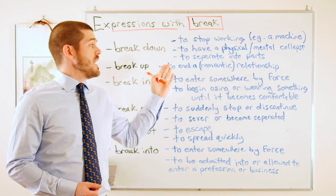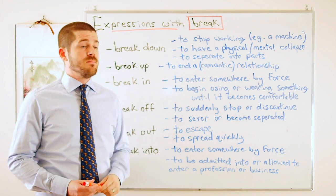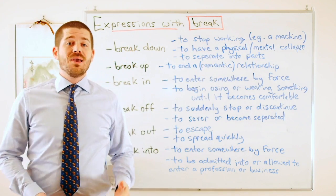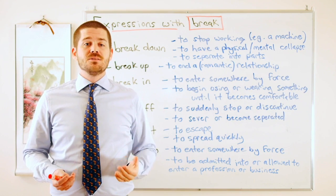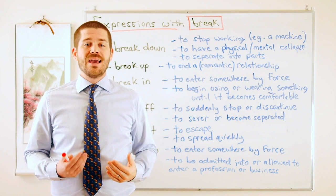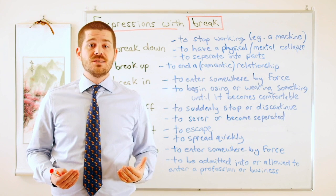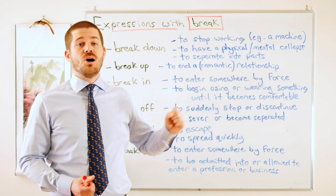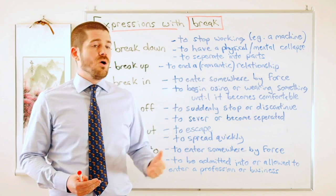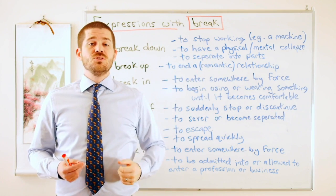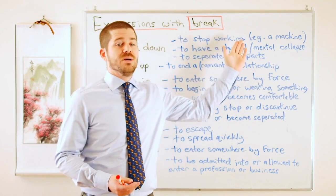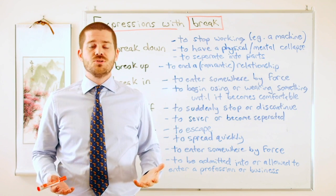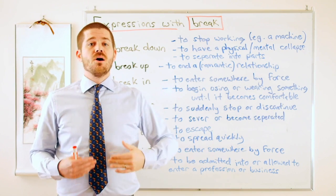The first one here says break down and I've chosen three different definitions for it. The first one says to stop working, for example a machine. If my car breaks down, that means my car has stopped working. I cannot use it. Same thing if my TV breaks down, or my computer breaks down, or my microwave breaks down, that means they have stopped working. Just be careful though when we use break down, it's usually only electronic things or machines. You would not say my couch broke down. It needs to be things that we use that are machines.